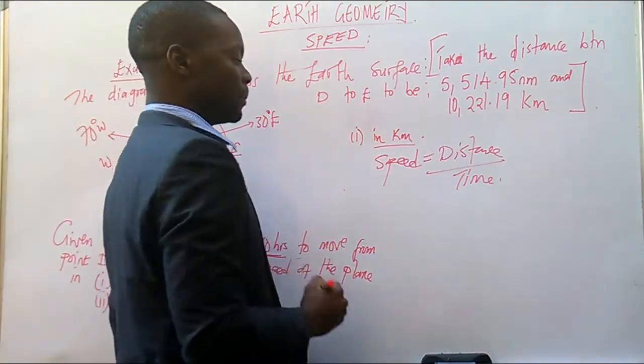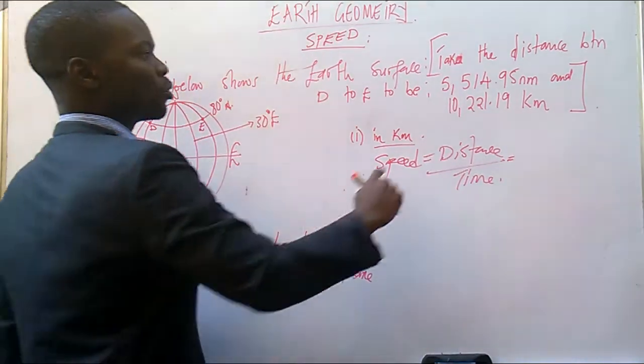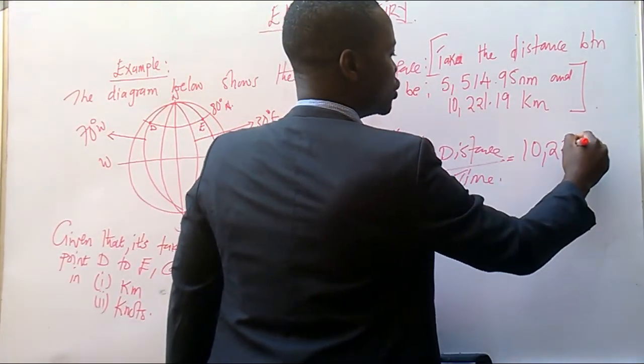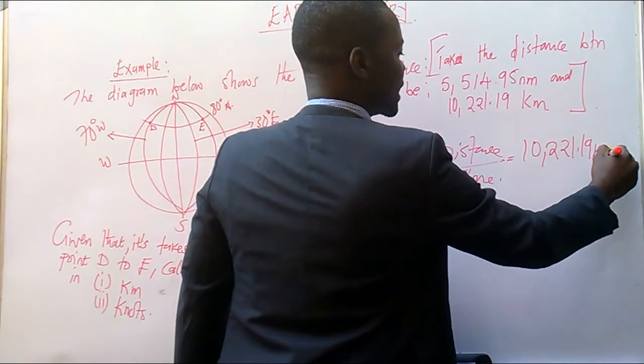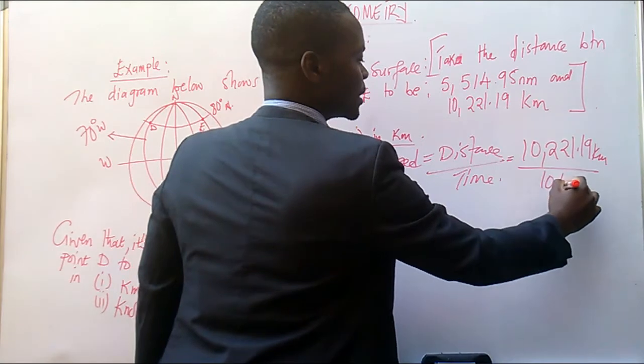So this is the formula, of which we know that the distance in kilometers is what? It's 10,221.19 kilometers over time taken, 10 hours.